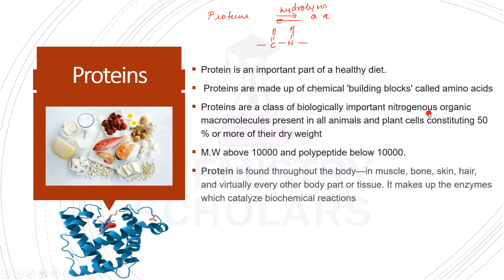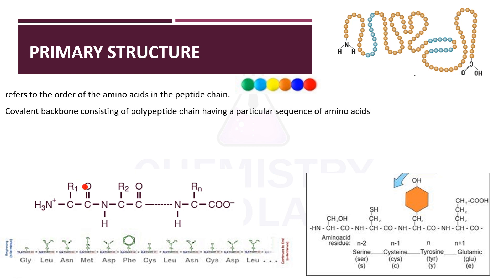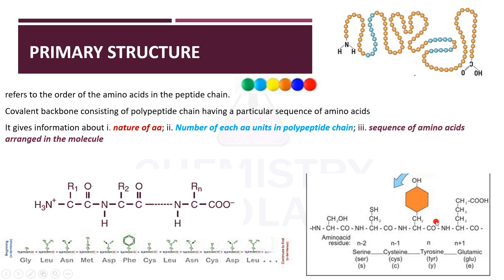Proteins are present in hair, bones, skin, and enzymes are proteins. Proteins are polymers of amino acids, and the peptide linkage is formed when amino acids react with each other. The primary structure is the basic structure of the protein, where you have a sequence of amino acids attached to each other. It has a covalent backbone — this is the polypeptide chain with peptide linkages and side chains.